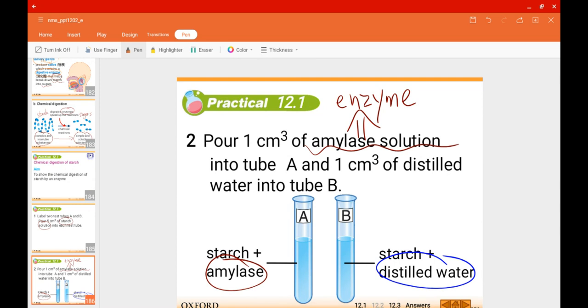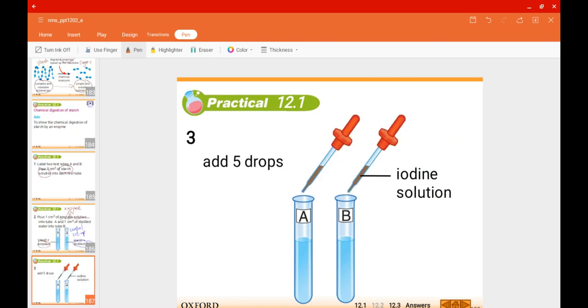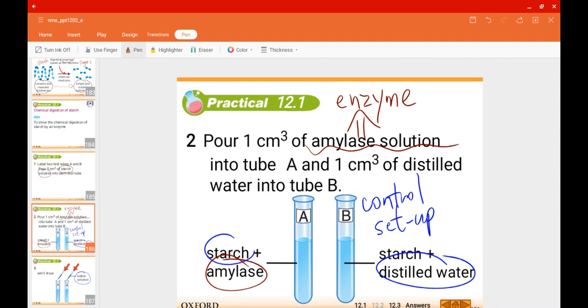In test tube B we will just add distilled water. You can guess the purpose of adding test tube B - it is to act as a control setup. We've learned several times what is a control setup. Afterwards, add 5 drops of iodine solution.